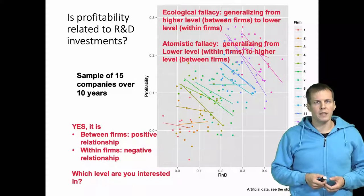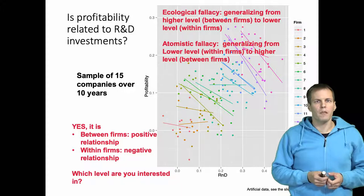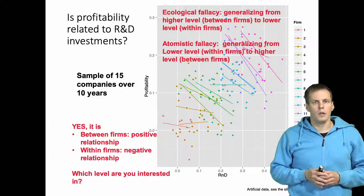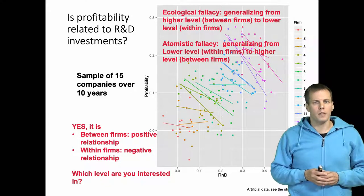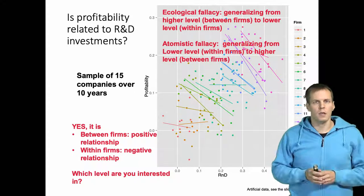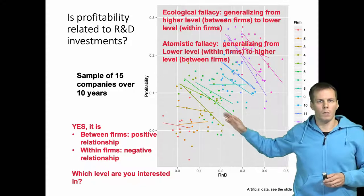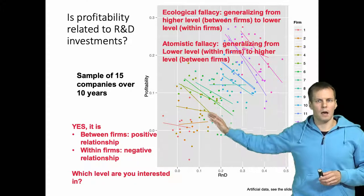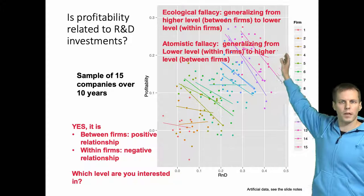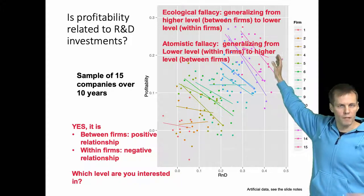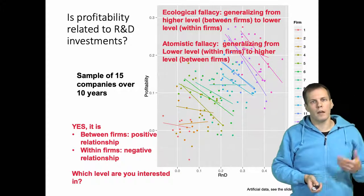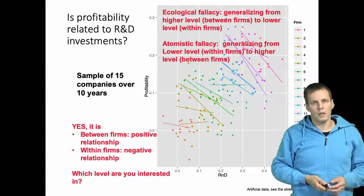Our example data is 15 companies observed over 10 years that we have looked at in a previous video, and we can see that the within effect and the between effect are not the same. These companies that invested only a little in R&D are less profitable than companies investing heavily in R&D. Nevertheless, the within effect in a company is negative.